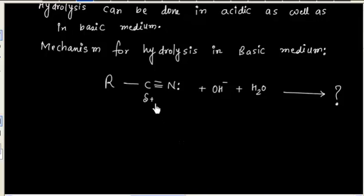This carbon has positive charge because nitrogen is more electronegative, it will have negative charge. So this bond is polarized. The CN bond is polar, so OH- can act as a nucleophile.